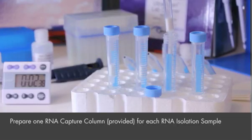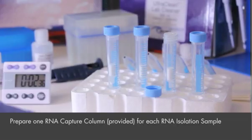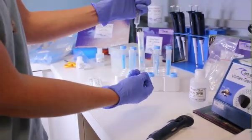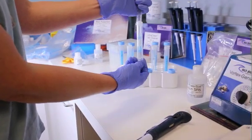Prepare one RNA capture column for each RNA isolation sample. Add 2 mls of solution SR5 to the column. You can let it flow by gravity or aid the flow by using a syringe to increase the pressure.